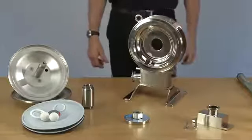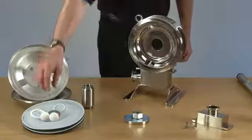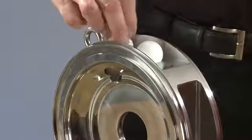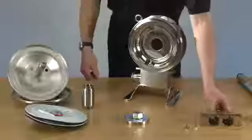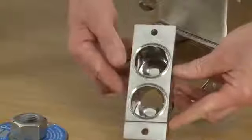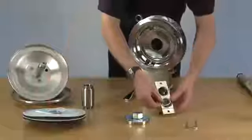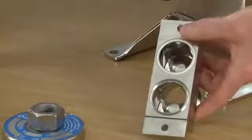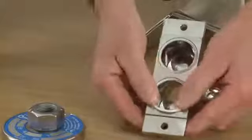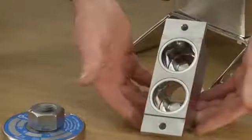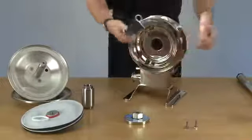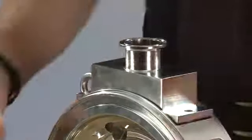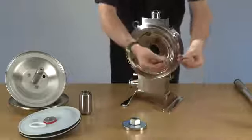Now we can place two delivery balls in. Now we can put the two seals into the delivery manifold. Now we can place the delivery manifold back onto the body. Secure the two bolts.